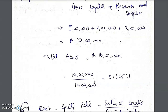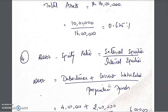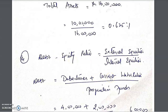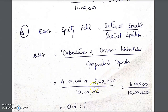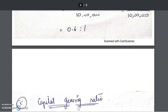The debt equity ratio is external equity divided by internal equity, or outsiders' funds divided by proprietors' funds. Debt includes debentures, current liabilities, and bank loans. Here, debentures are 4 lakh and current liabilities are 2 lakh, totalling 6 lakh. Divided by the proprietary fund of 10 lakh, the debt equity ratio is 0.6 is to 1 — a fairly good position.